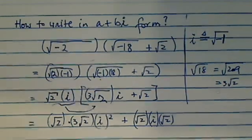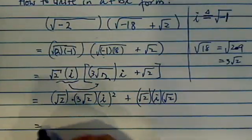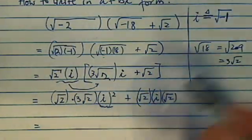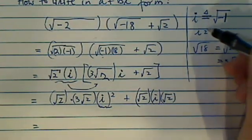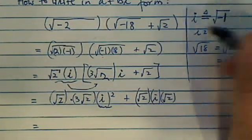Let's put all the parentheses there. And then here, by definition, since i by definition is radical minus 1, i squared equals minus 1. This is important.